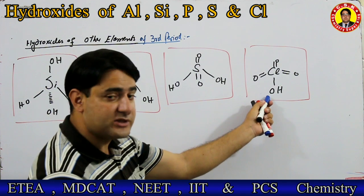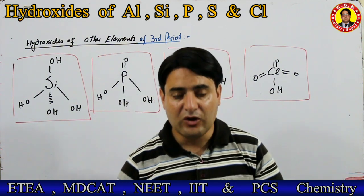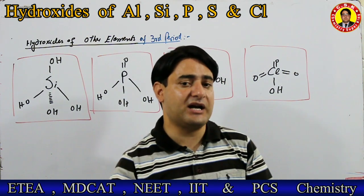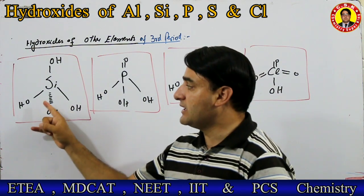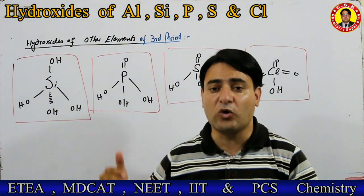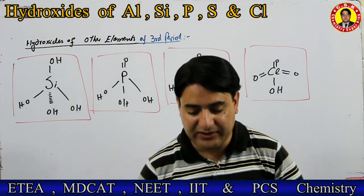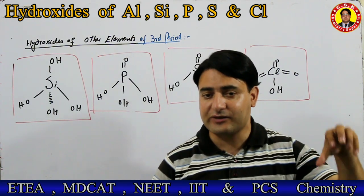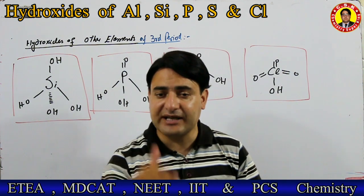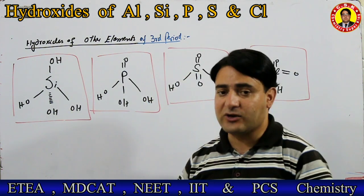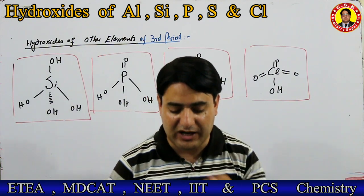باقی جو elements of third period ہیں — silicon، phosphorus، sulfur، chlorine — ان کے hydroxides کی structure مختلف ہوتی ہے۔ In these hydroxides, the proton is attached with oxygen — hydroxyl group is covalently bonded with the central element. These hydroxides are acidic in nature — and their acidic strength is different: silicon hydroxide is very weak, phosphorus is weak, sulfur is strong, and chlorine hydroxide is very strong.